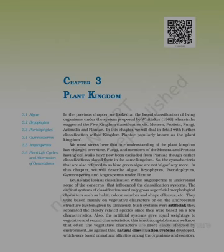Here we are back again with the next chapter, Plant Kingdom. In the previous chapter we looked at the broad classification of living organisms under the system proposed by Whittaker in 1969, wherein he suggested the five kingdom classification: Monera, Protista, Fungi, Animalia and Plantae. In this chapter we will deal in detail with further classification within kingdom Plantae, popularly known as the Plant Kingdom.